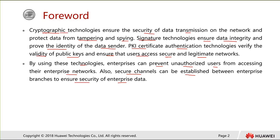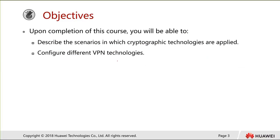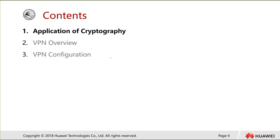The key terms here are: cryptography technologies, signature technologies, and PKI certificates. Upon completion of this course, we should be able to describe the scenarios in which cryptographic technologies are applied and look at different VPN technologies. The topics covered are: the application of cryptography, a VPN overview, and VPN configuration.